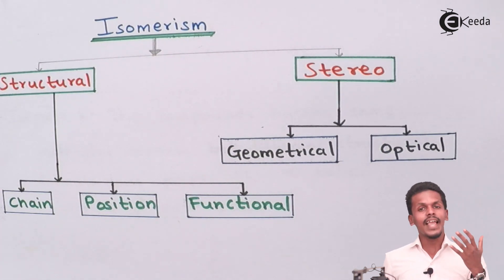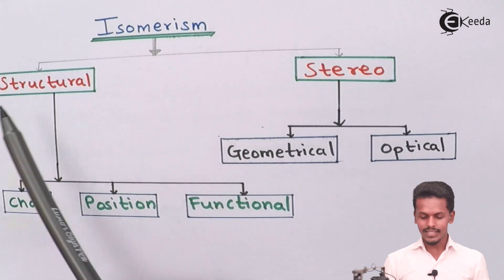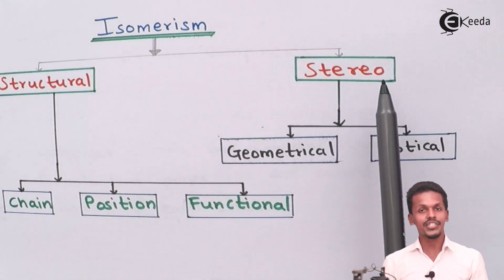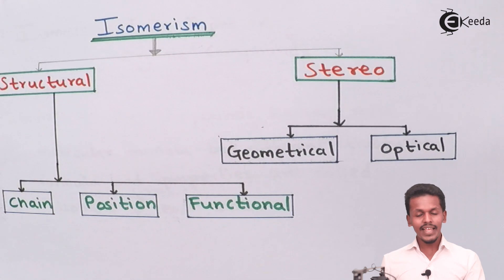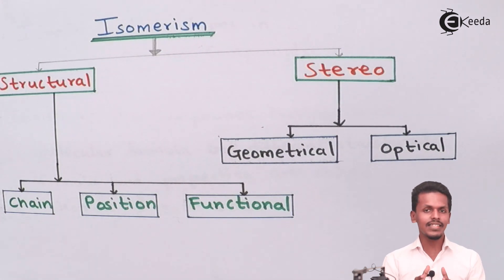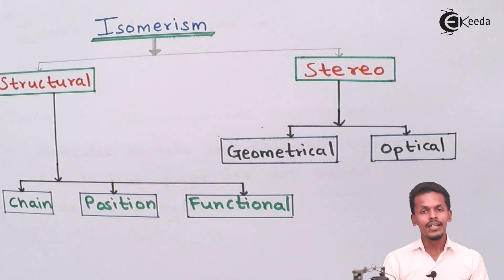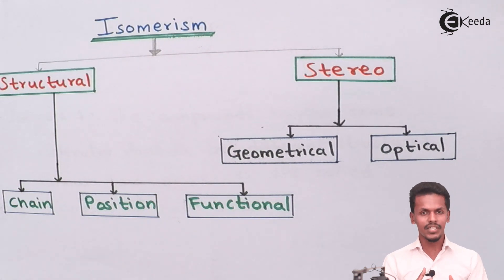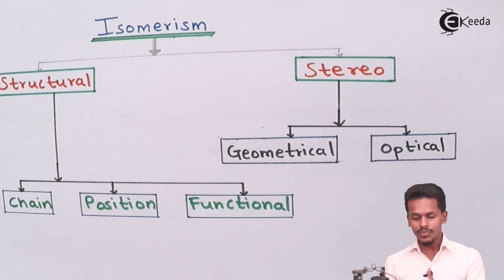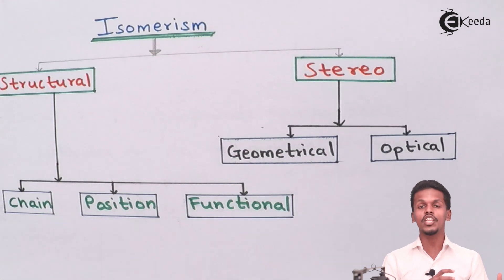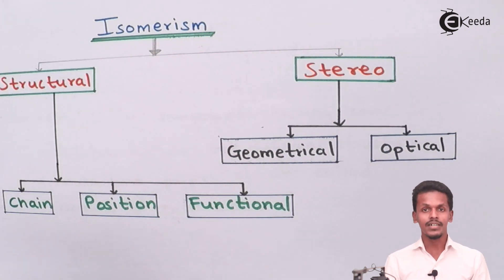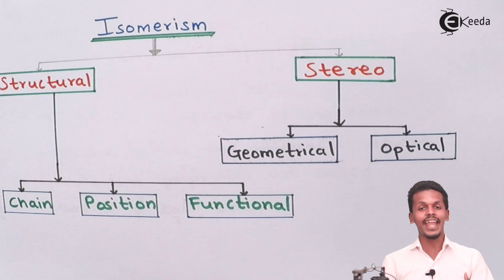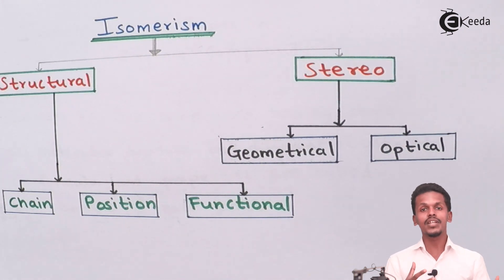Isomerism is basically divided into two parts: structural isomers and stereoisomers. Structural isomers, as the name suggests, differ in the structural formula — that is, the arrangement of atoms. Stereoisomers, on the other hand, differ in the arrangement of atoms in space, i.e., their spatial arrangement.